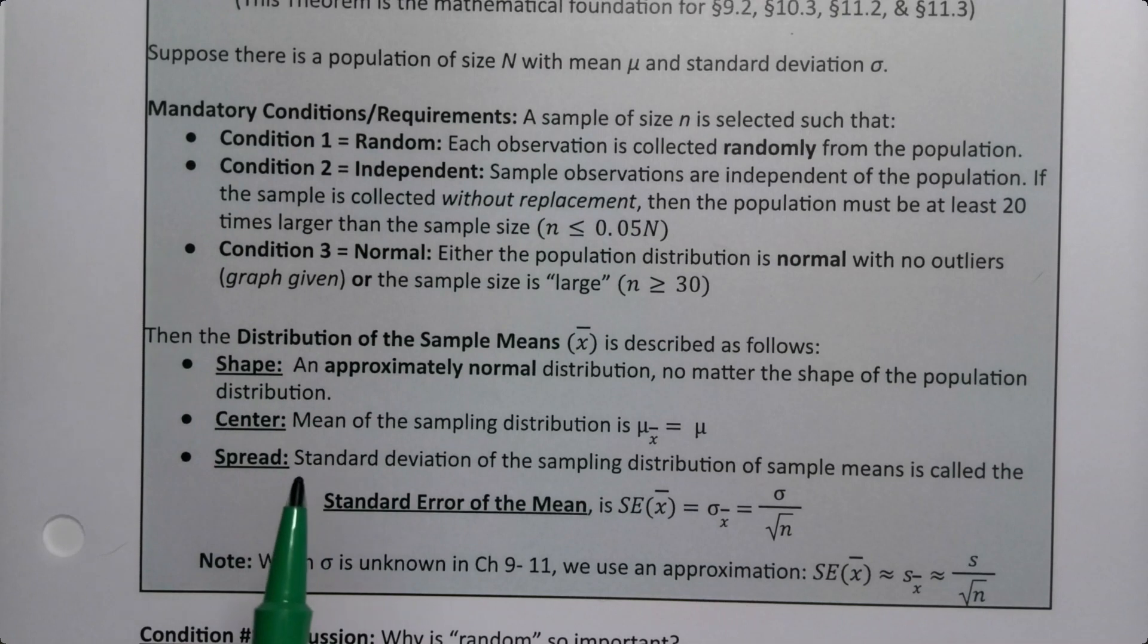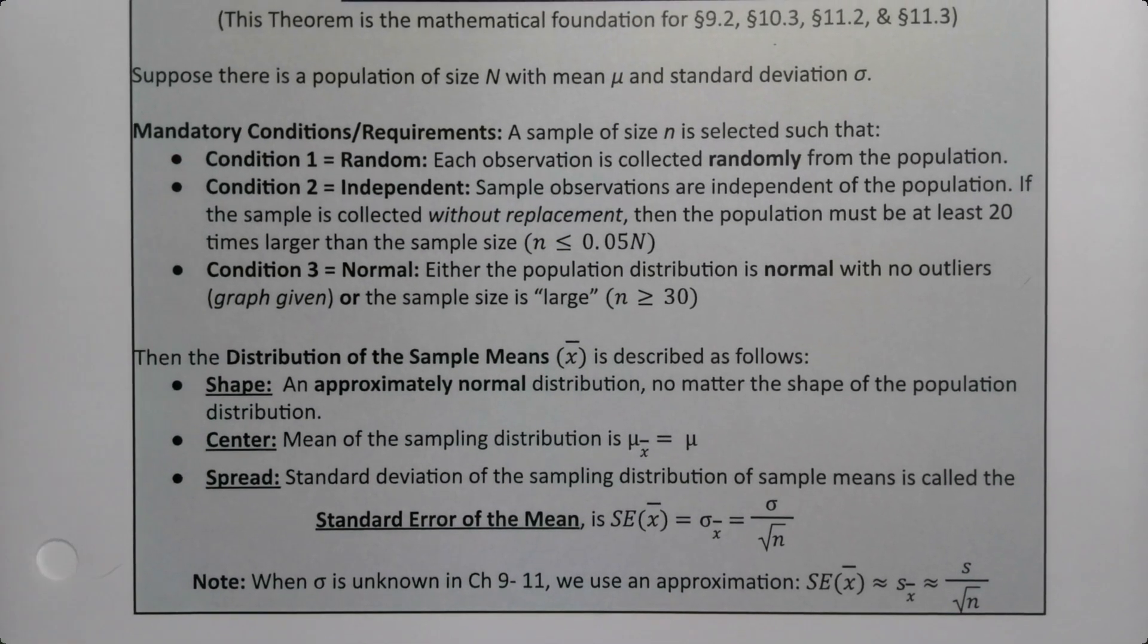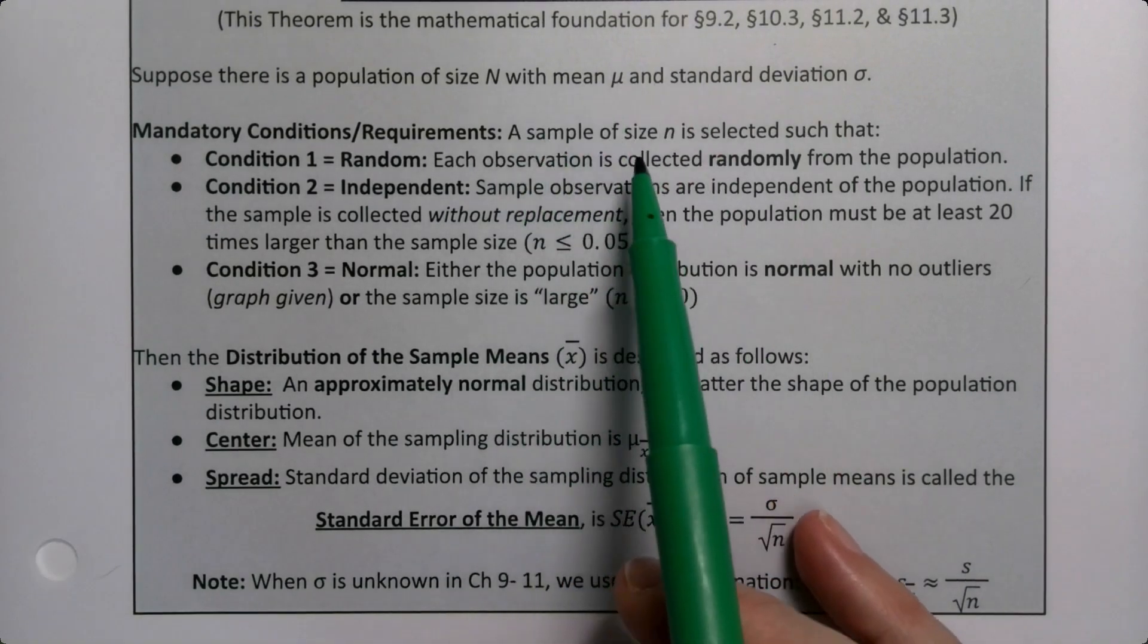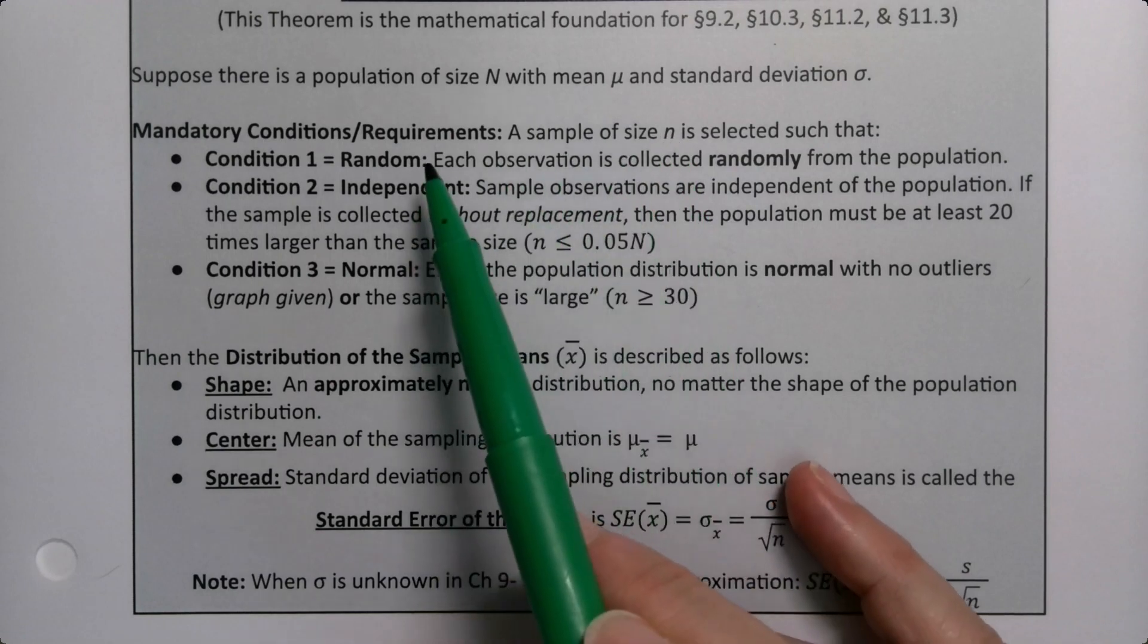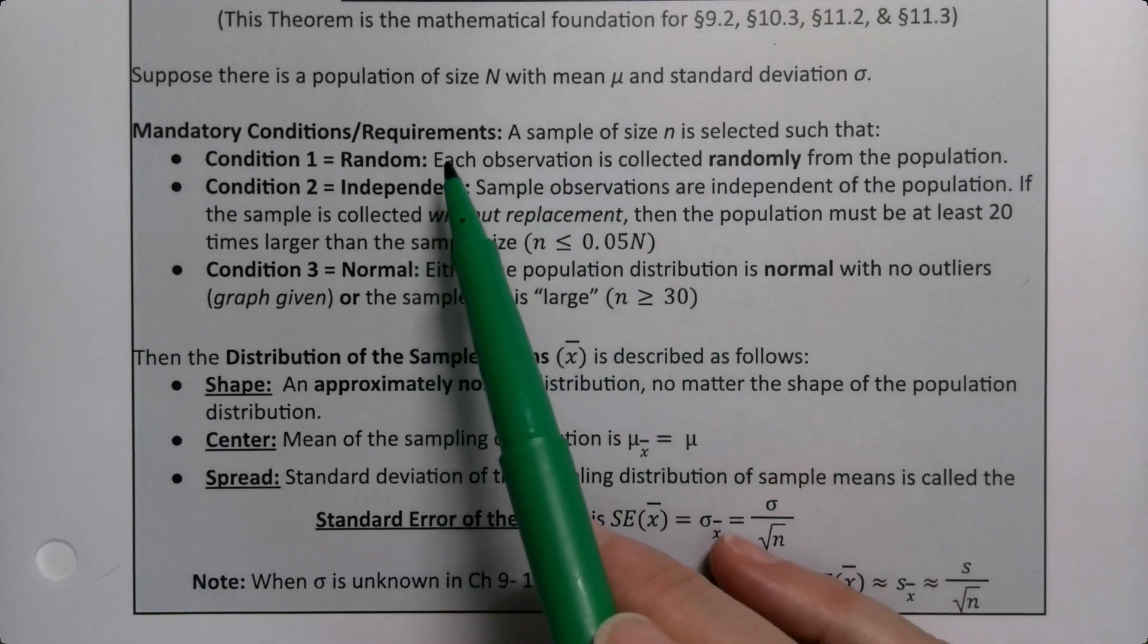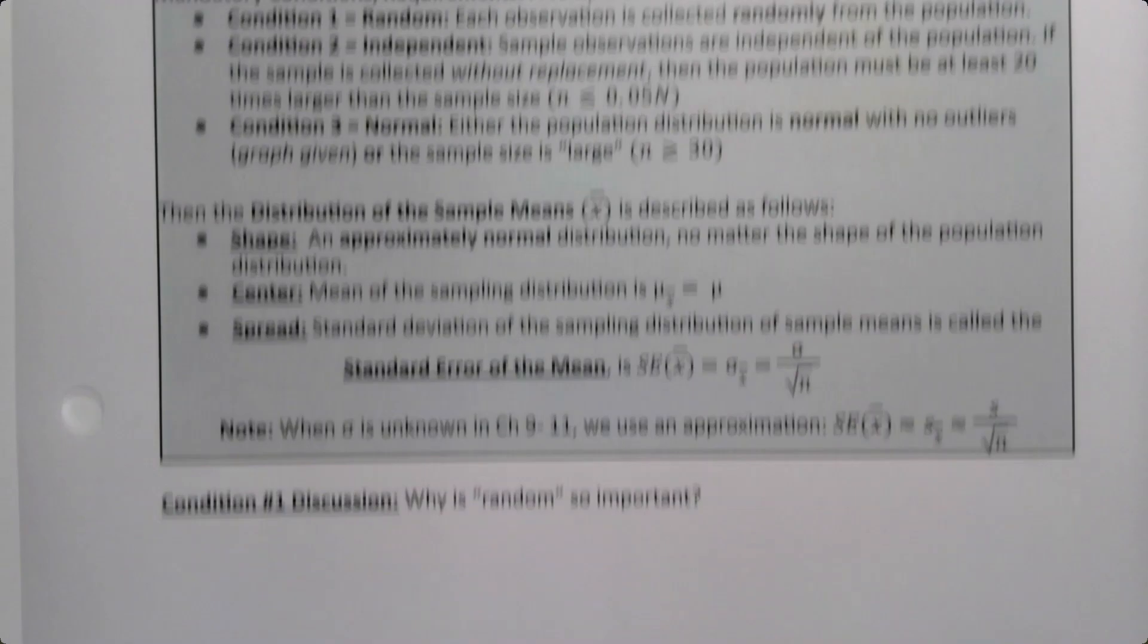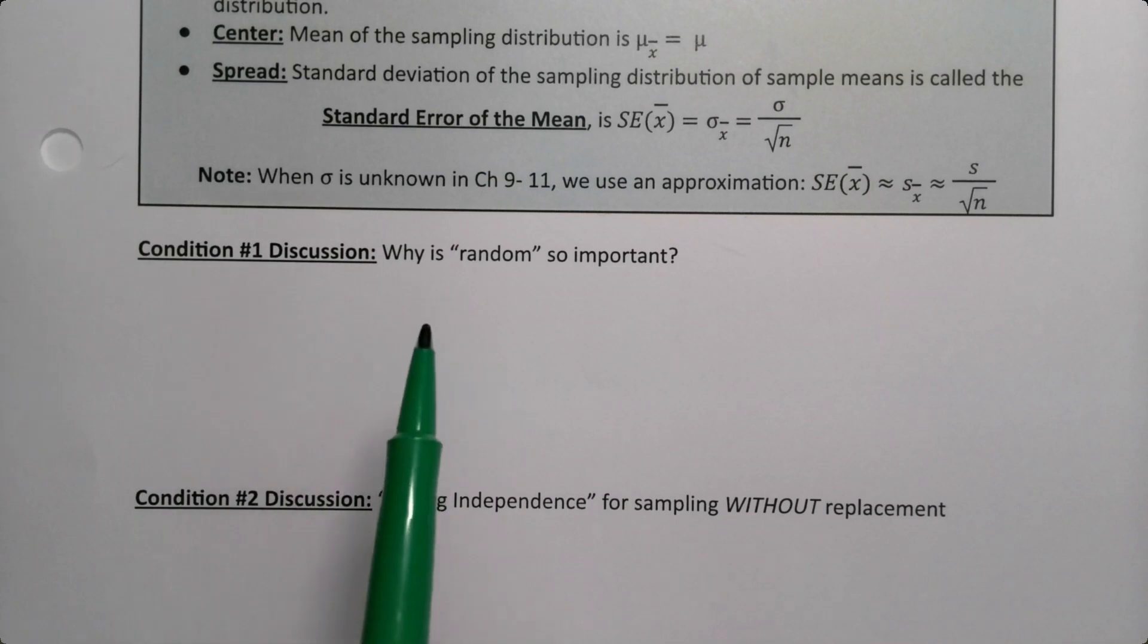But the thing about the central limit theorem is that it's only available to us under a few conditions. There are a few requirements or conditions that have to be met in order for the central limit theorem to be validly used. Remember what a sampling distribution is - it's when we're taking a sample of size n. So that sample has to be randomly collected. We can't have a non-random sample. And this leads us to condition number one. Why is random such a big deal?